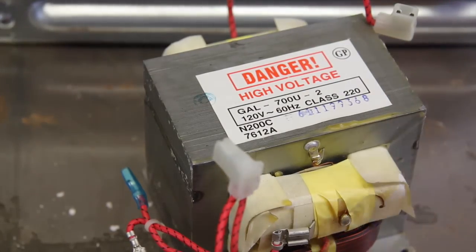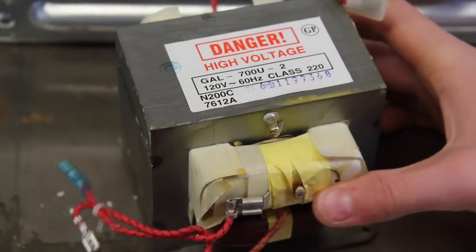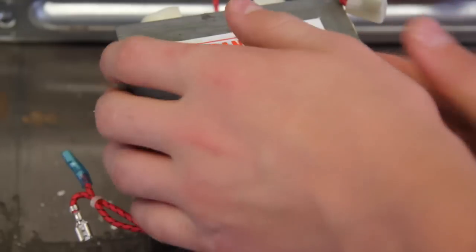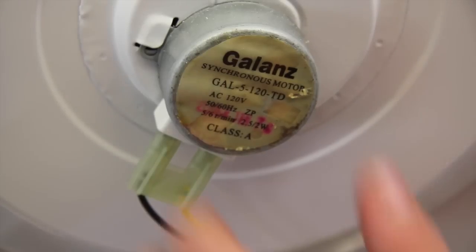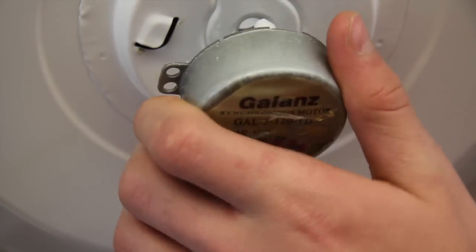Now this is what we want. This is really good stuff right here. This is the turntable that goes in the bottom of the microwave. I will be using this.